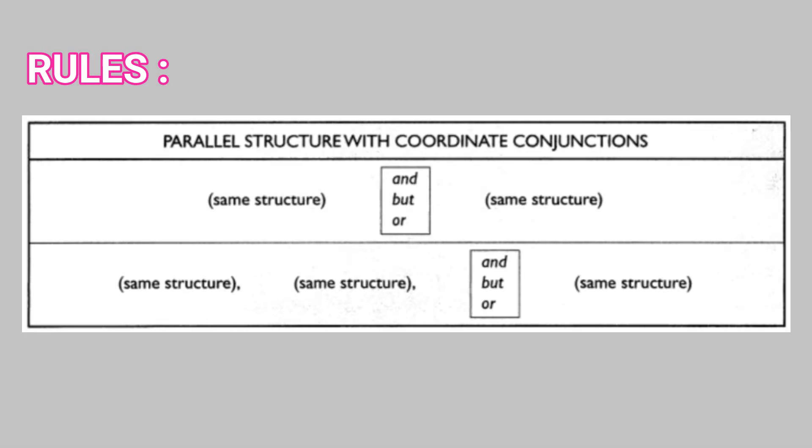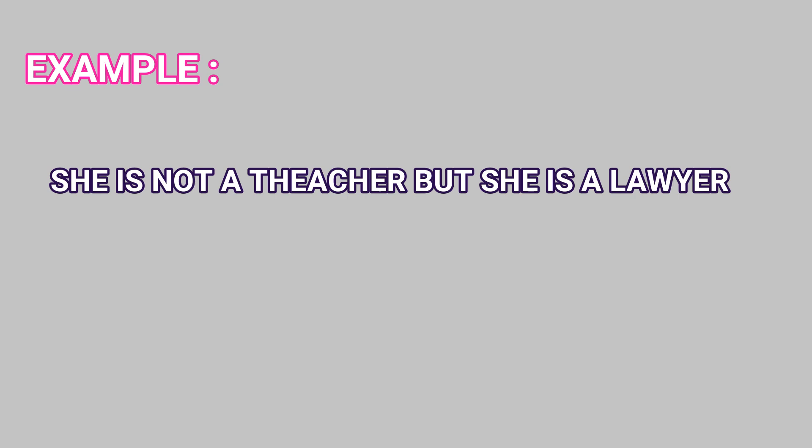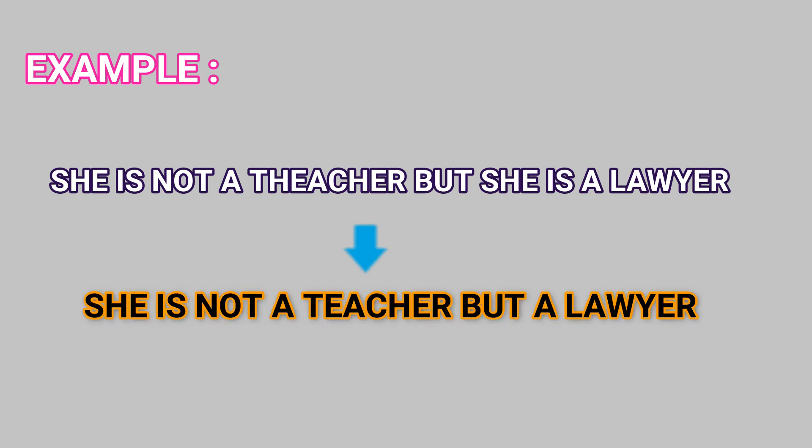So the rules of parallel structure with coordinate conjunctions is it has to be in the same structure. So the first sentence and the second sentence should be in the same structure. If the first sentence is present tense, so the second sentence has to be in present tense. For example, she is not a teacher but she is a lawyer. And we join it by a coordinate conjunction, it should be she is not a teacher but a lawyer.